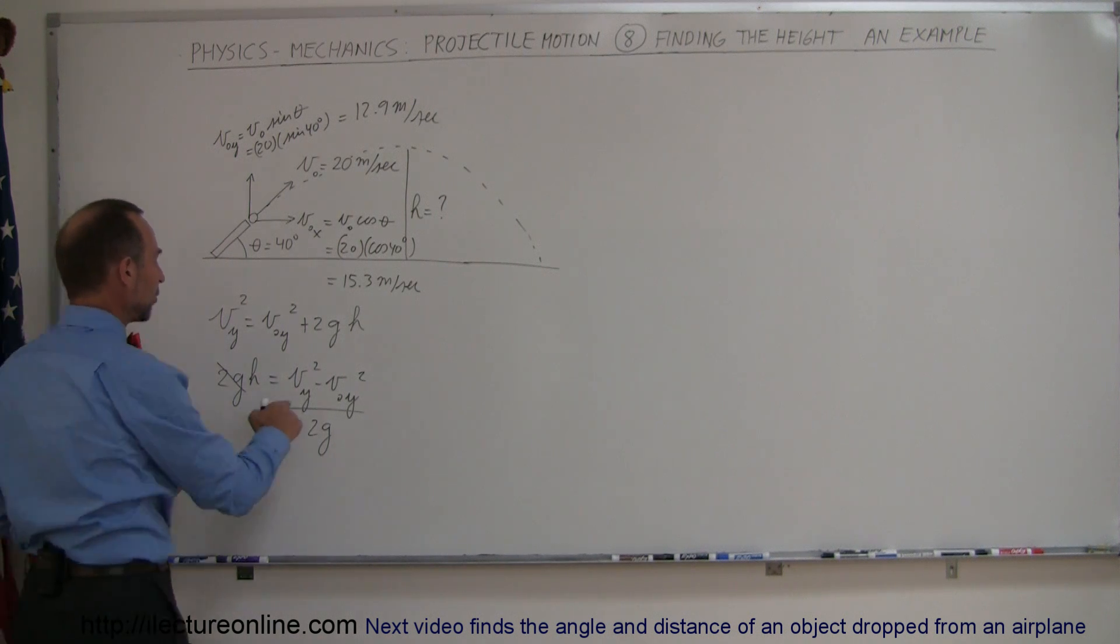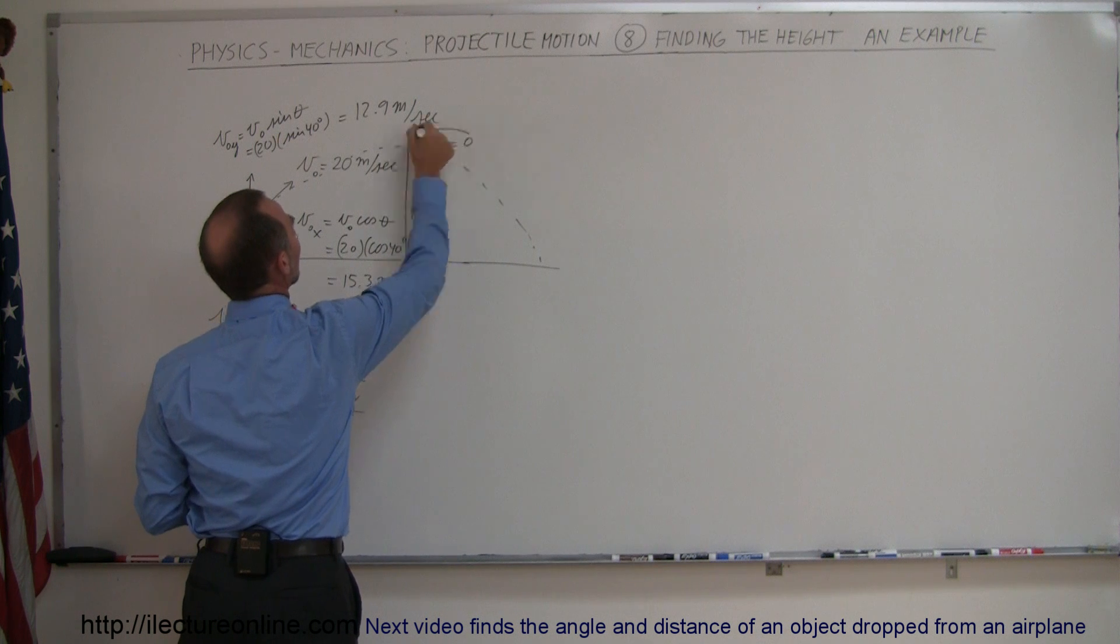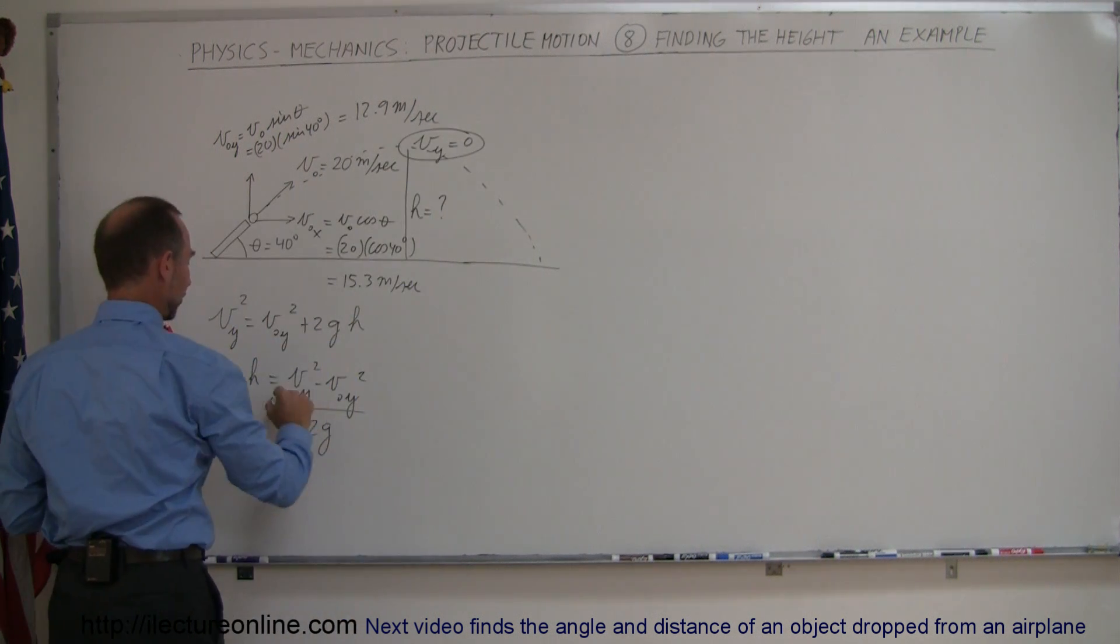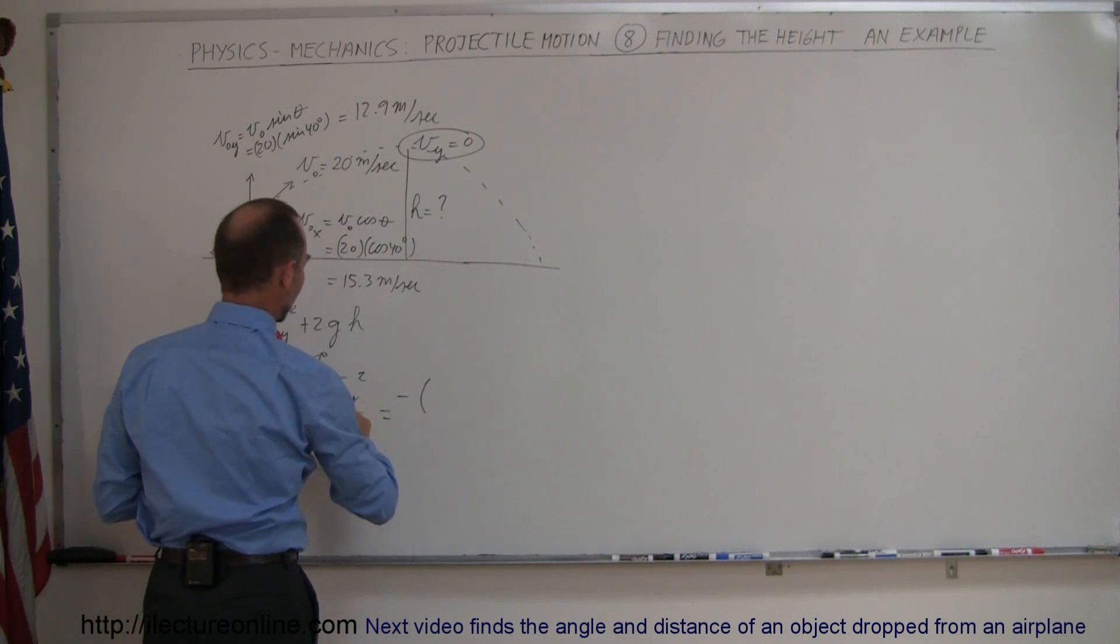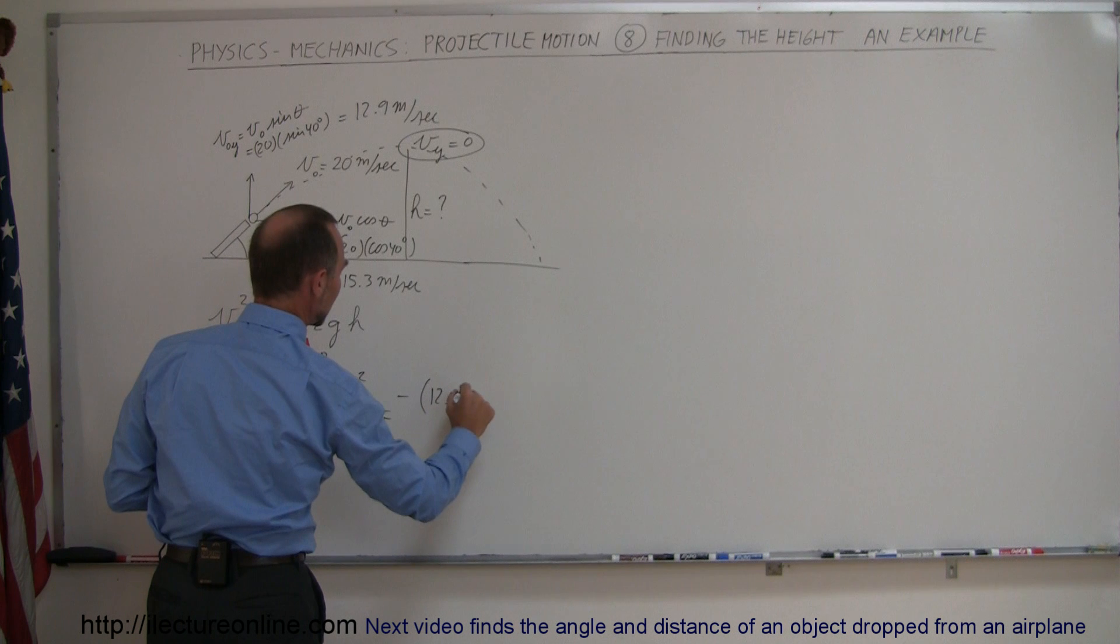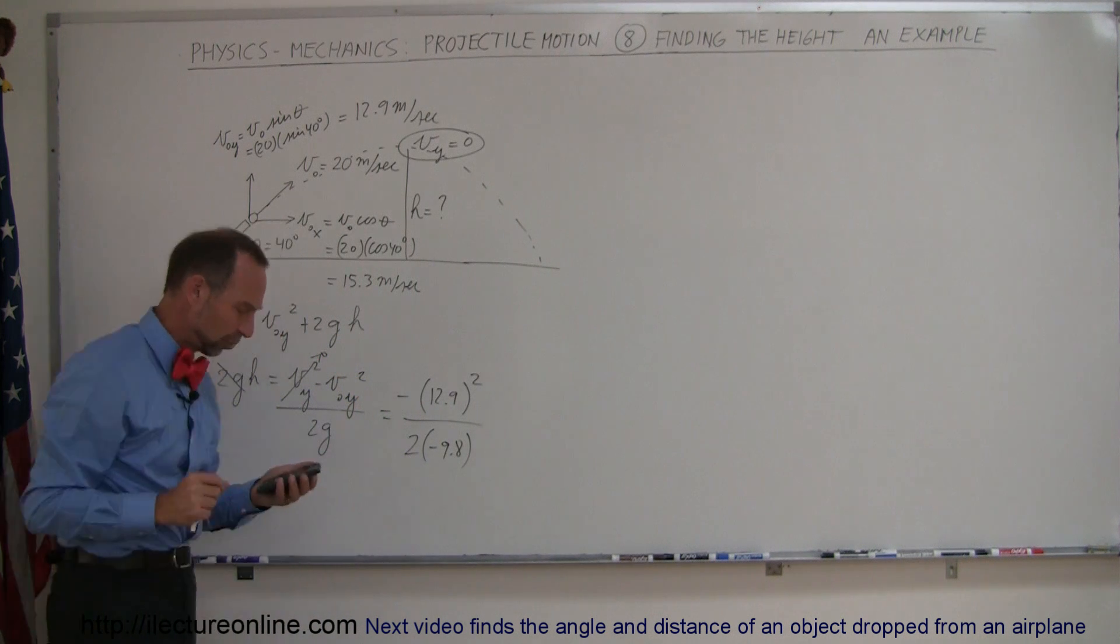So v sub y at the very top is going to be 0 at the top right here, so this becomes 0 and so this becomes equal to minus v initial in the y direction which is 12.9 meters per second squared divided by 2 times minus 9.8 meters per second squared.